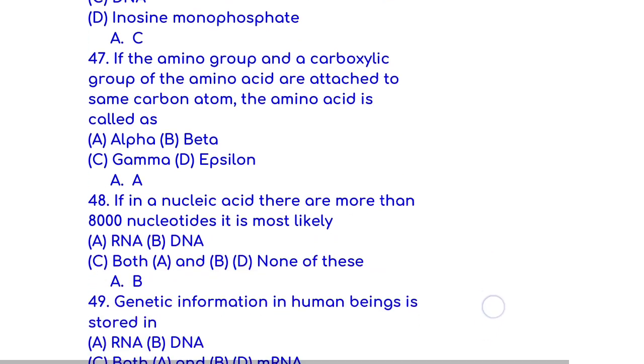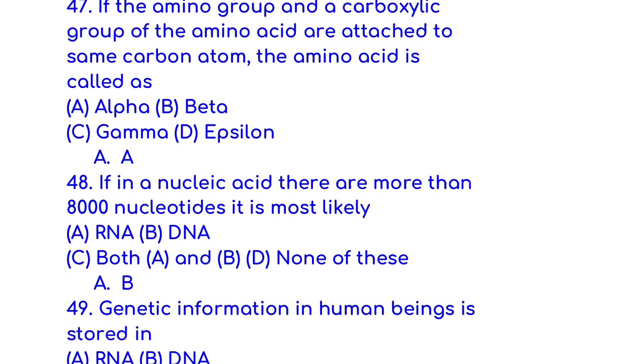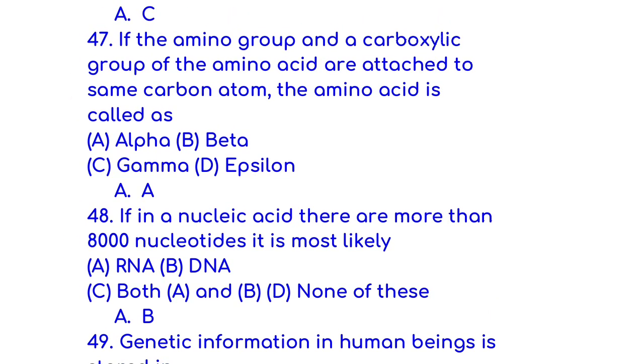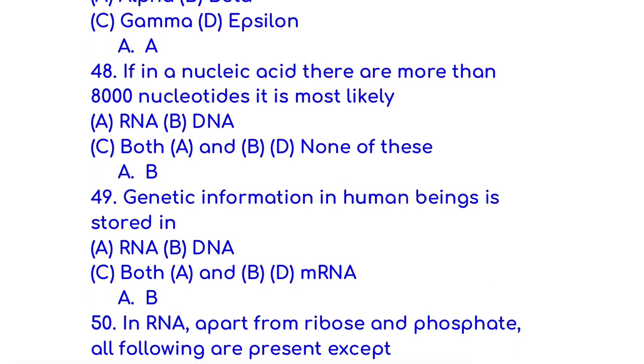If the amino group and a carboxylic group of the amino acid are attached to the same carbon atom, the amino acid is called as alpha. If in a nucleic acid there are more than 8000 nucleotides, it is most likely DNA.